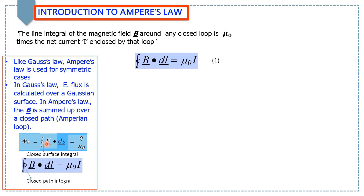Mathematically, Gauss's law is: closed integral E dot dL equals q over epsilon naught. And mathematically, Ampere's law is: closed integral B dot dL equals mu naught I. Please remember, in the case of Gauss's law, the closed integral is a closed surface integral, and in the case of Ampere's law, the closed integral is a closed path integral.